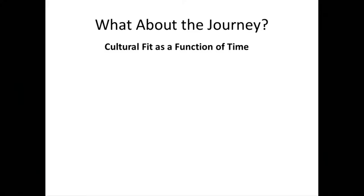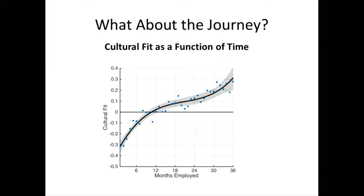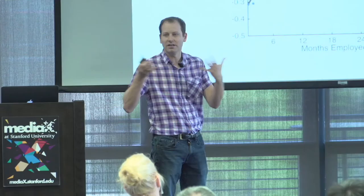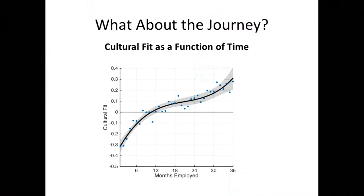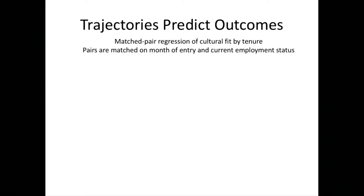But you might ask: what about that whole spiel about taking a journey and not just looking at absolute numbers? This is what the average individual in the organization looks like as a function of months employed. The average person increases from low cultural fit to high cultural fit — the grayed-out area represents the 95% confidence interval. The average newcomer starts with low cultural fit and gradually increases it, reaching the average level of cultural fit in the organization by around 12 months.